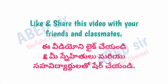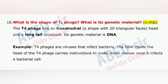Next important question is 16: What is the shape of T4 phage? What is its genetic material? The T4 phage has an icosahedral head — a shape with 20 triangular faces — and a long tail structure. Its genetic material is DNA. T4 phages are viruses that infect bacteria. The DNA inside the head of the T4 phage carries instructions to make more viruses once it infects a bacterial cell.